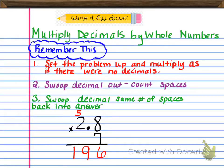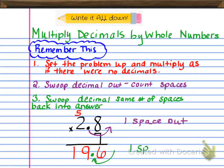Now we're going to do step 2: swoop the decimal out and count the spaces. We went one space out from where the decimal is to the right — so that's one space. Now we're going to count the spaces back into the answer starting at the far right, which is where we swooped the decimal out to. We count one space back in, so our final answer for this problem is 19.6. Pretty easy, right?